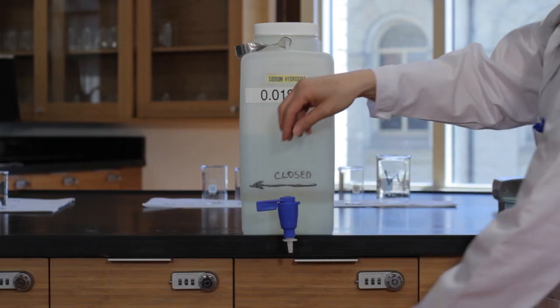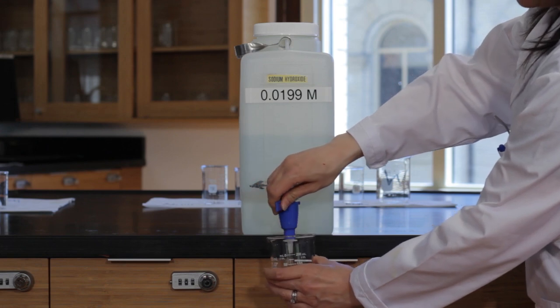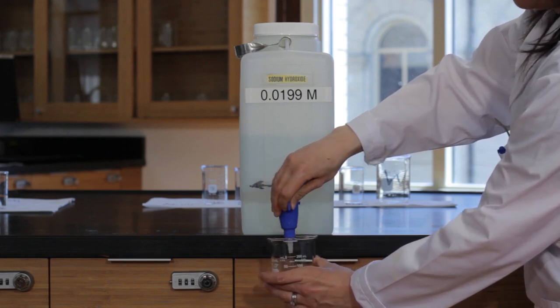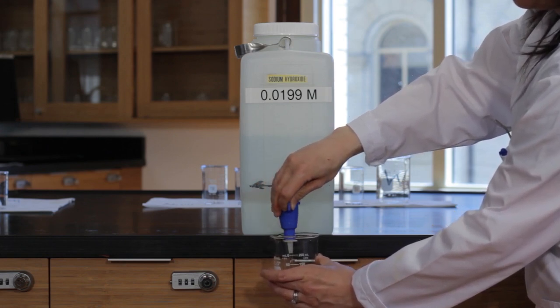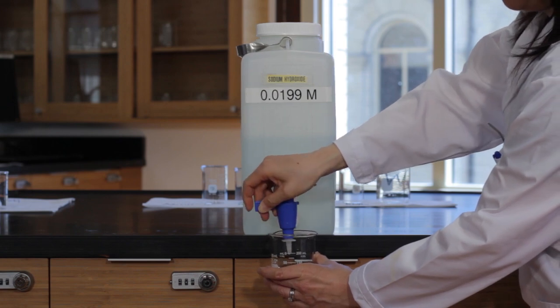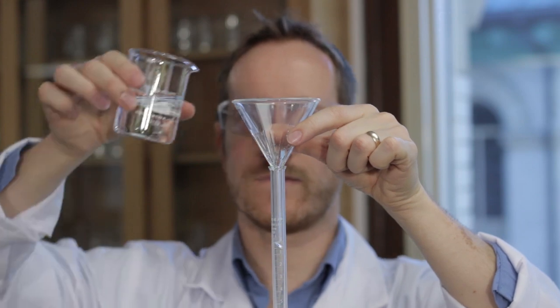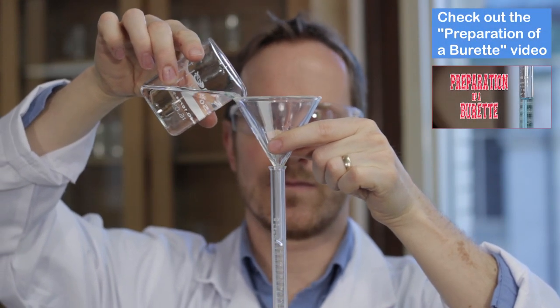Transfer some of the sodium hydroxide from the main source into a clean, dry, medium-sized beaker. Record the concentration of the sodium hydroxide solution. Prepare the burette as demonstrated in another video using the sodium hydroxide solution.